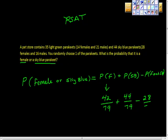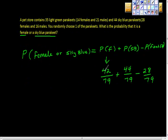So what's the probability that the parakeet is female and sky blue? 28 over 79. So the total probability is we add these two together, don't we? We get 86 minus 28. What's 86 minus 28? 58. So 58 over what? 79. Is the probability of female or sky blue? Nicely done.